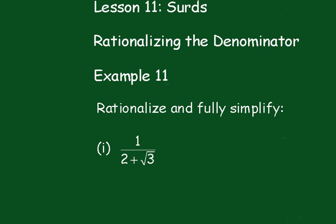Alright, now here's an example. We will multiply top and bottom by the conjugate. And the conjugate of 2 plus root 3 is 2 minus root 3.